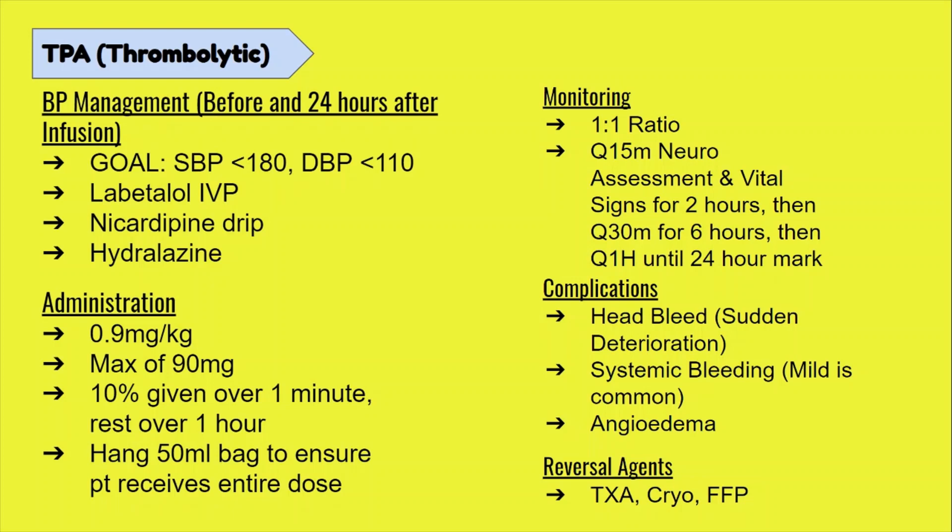Once TPA is given, the patient becomes a one-to-one, meaning this patient is your only patient for eight hours. Most facilities follow the protocol of Q15-minute vital signs and a neuro assessment for two hours, then Q30-minutes for six hours, and then Q1-hour for 24 hours. Your patient is a one-to-one for the first eight hours due to how often you're assessing them.